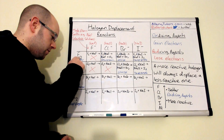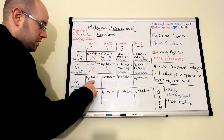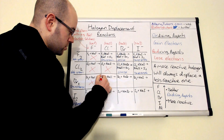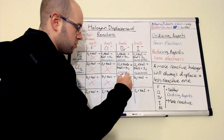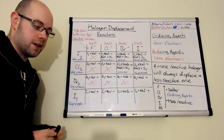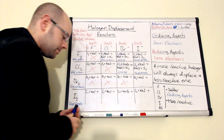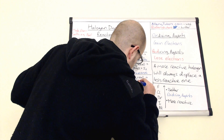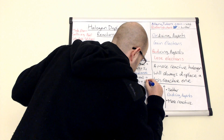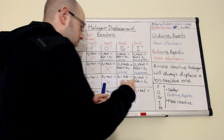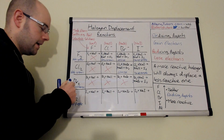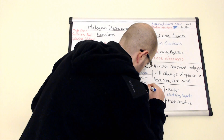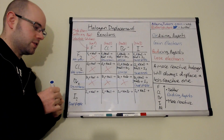On to bromine. Bromine is not as reactive, so bromine reacting with a fluoride compound gives no reaction — bromine is not strong enough as an oxidizing agent. Bromine reacting with sodium chloride also gives no reaction, as bromine is not as reactive as chlorine. Bromine reacting with bromine — equally reactive, so no reaction. However, Br2 plus NaI: bromine is more reactive than iodine, so we form NaBr plus I2. Balance with twos, and we get iodine solution, which is deep purple.